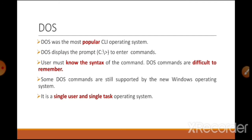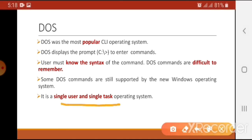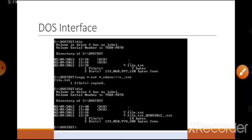DOS stands for Disk Operating System. It was an old operating system which was single-user and single-tasking, which means it cannot allow multiple users or multiple programs to run at the same time. Its interface has a black background with white text written on it, as shown in the figure.